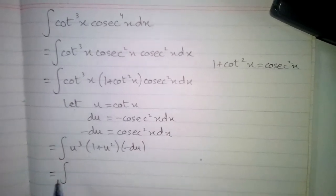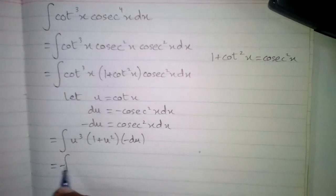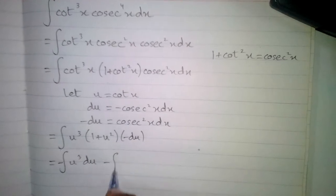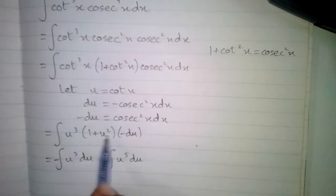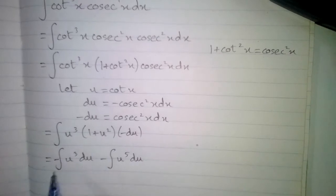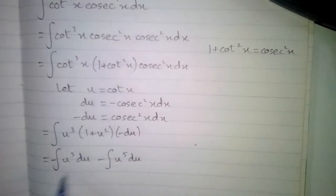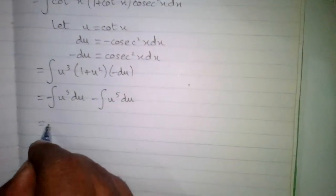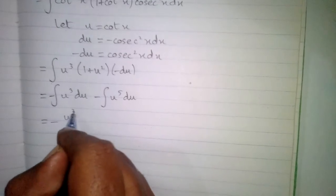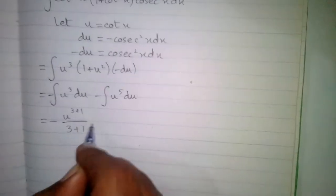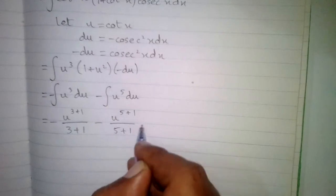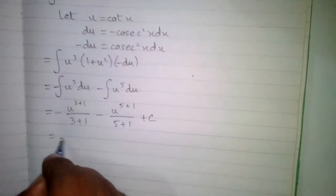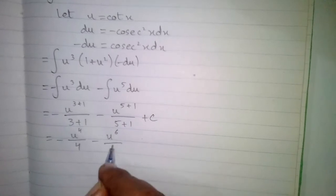This simplifies to minus integral of u cube du minus integral of u to the 5th du. Since u cube times u square is u to the 5, and u cube times 1 is u cube. So we get minus u to the power 4 upon 4 minus u to the power 6 upon 6 plus c, where c is the constant of integration.